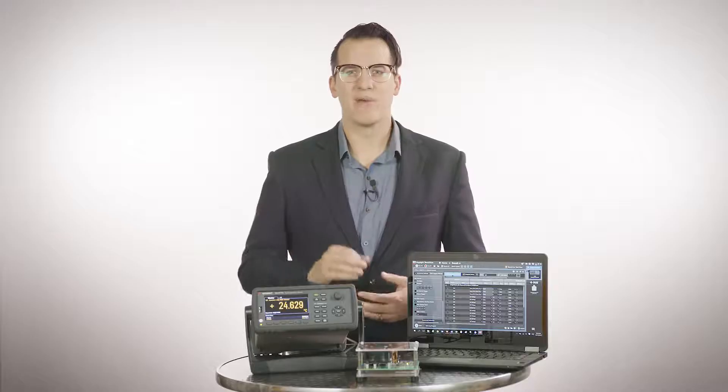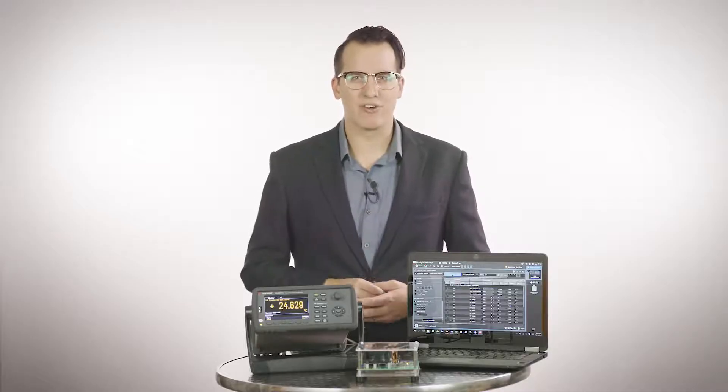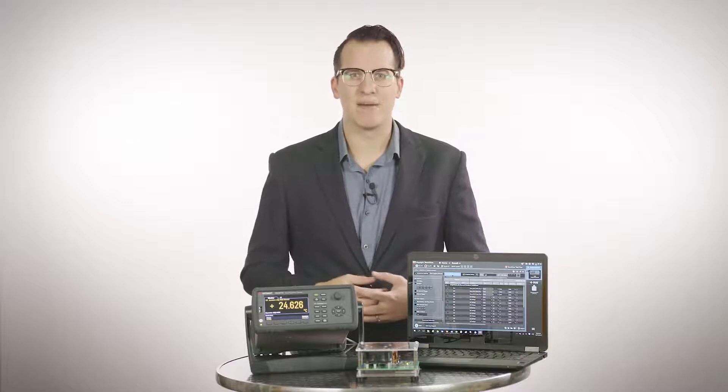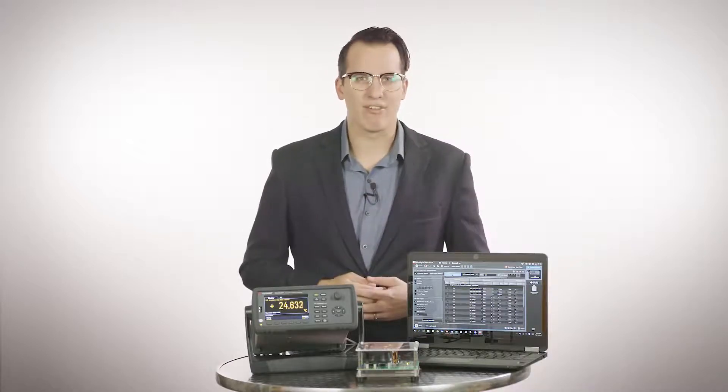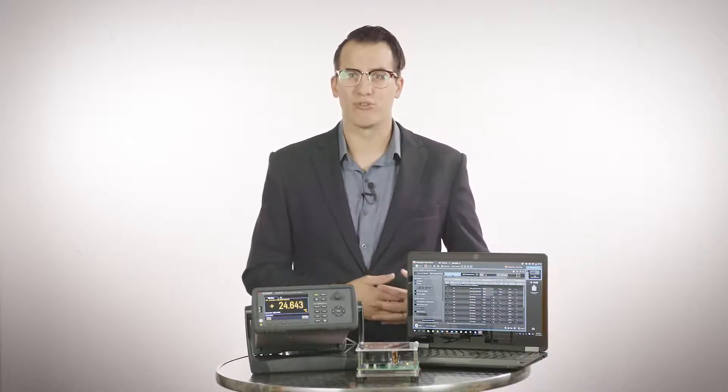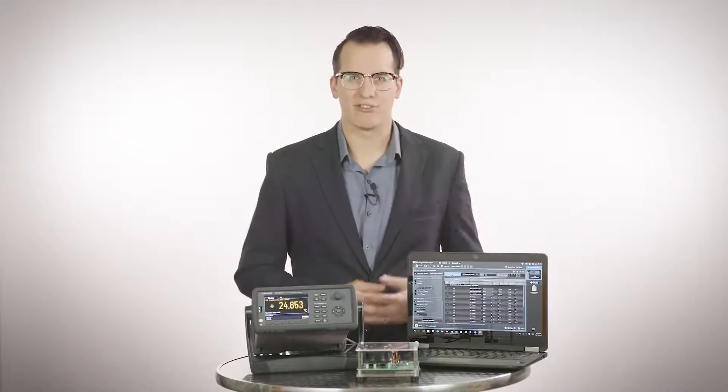The DAQ 970A also has up to 90% better accuracy for voltage, current, and resistance measurements. It comes with a new auto calibration feature which compensates the internal DMM and the new DAQ M907A multi-function module for drifts caused by time and temperature changes.